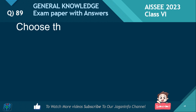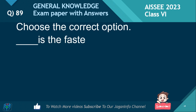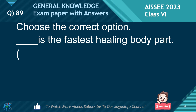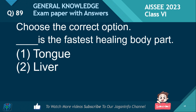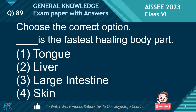Choose the correct option. Which is the fastest healing body part? Options: Tongue, Liver, Large intestine, Skin. The right answer is Tongue.